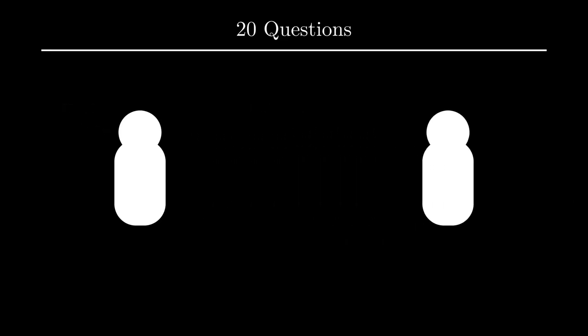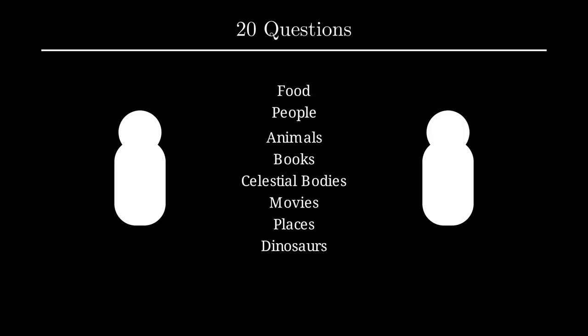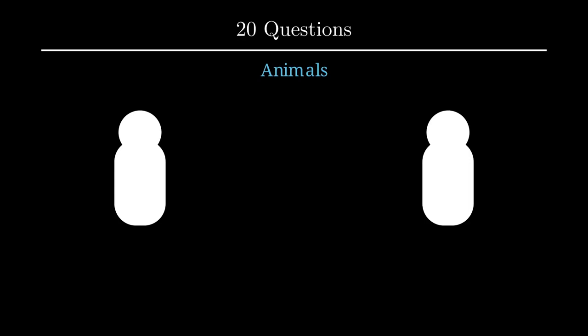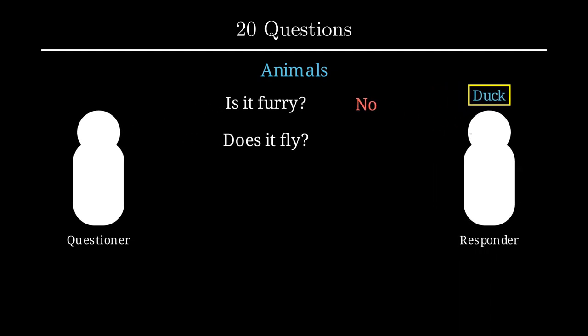The players start by deciding on a category. Historically, a variety of categories have proven entertaining, but let's go with animals for now since it's a classic. One player, which we'll call the responder, will now choose an animal at random and keep it to himself as a secret, and it's the job of the other player, the questioner, to guess this animal by asking a sequence of yes or no questions.